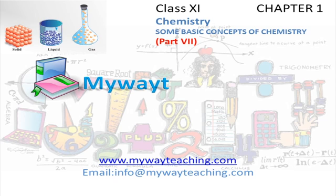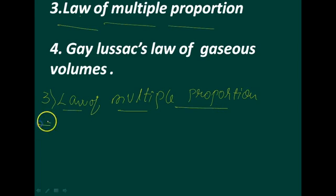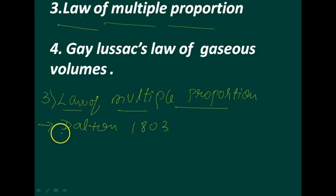This video is brought to you by mywayteaching.com. The Law of Multiple Proportions was introduced by Dalton in the year 1803. According to this law, if two elements can combine to form more than one compound, the masses of one element that combine with a fixed mass of the other element are in the ratio of small whole numbers.